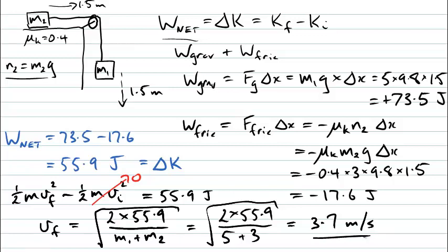Nowhere in this calculation did we need to find the acceleration of the masses or the tension in the string. A good exercise is to redo this problem using Newton's laws of motion to find the net force and acceleration, then use the equations of motion — starting from rest — to calculate the final velocity after 1.5 metres. If done correctly, you should get exactly the same answer.